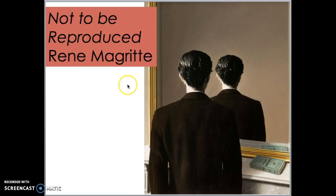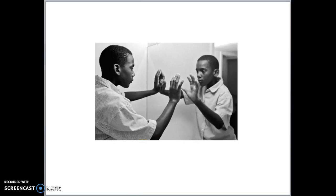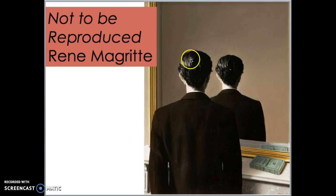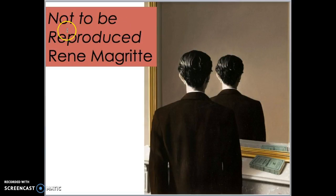When you reproduce something, it means you end up with a second one. When you look into a mirror, it's like you've been reproduced because there are now two of you. Now look at his painting — he's looking into the mirror, but he's not seeing the front of his face like a typical mirror would show. That's why Magritte gave it this title: Not to be Reproduced.